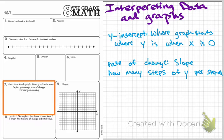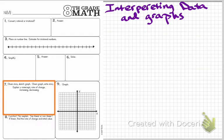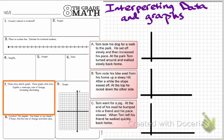We're asked to describe those forms of what's happening in our graph. Let's go ahead and start with an example of a few stories that we can create a graph from. Here I have three stories, and we're going to draw a graph for each. Our first story says: Tom took his dog for a walk to the park.